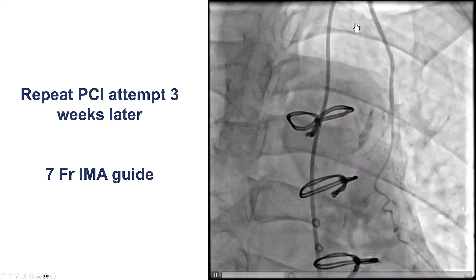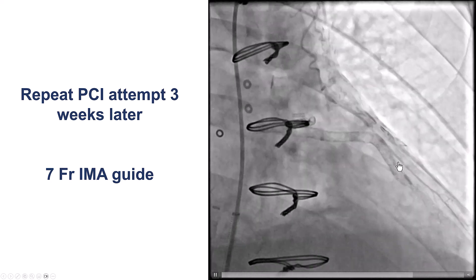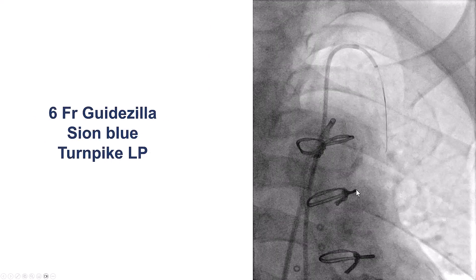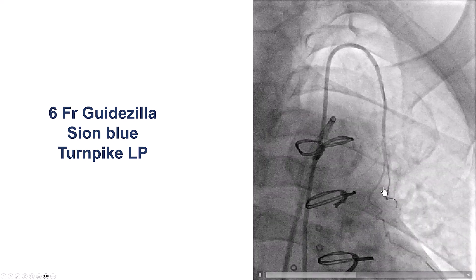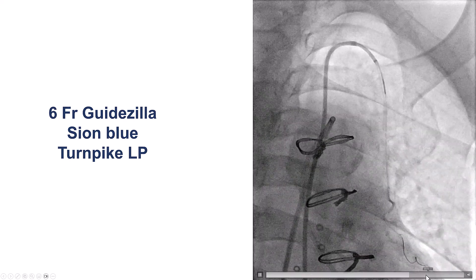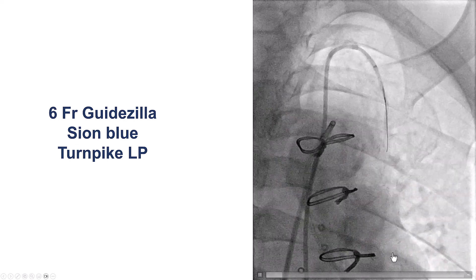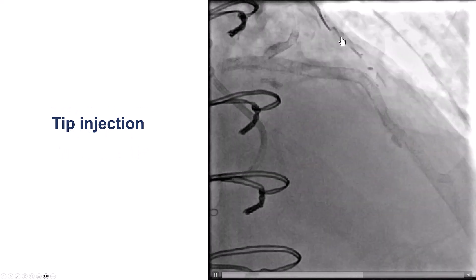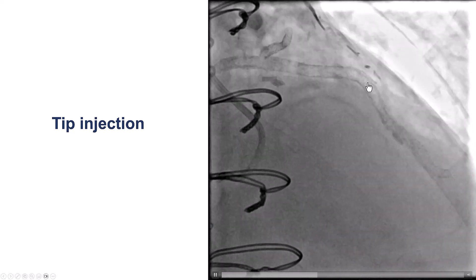The patient came back three weeks later. This is the picture of the LIMA — the vessel is visible, then becomes much smaller and tapered. This is a 7-French IM guide. We placed a guide extension and advanced a workhorse guidewire inside the LIMA. The wire moved quite a bit and is now close to the previously placed stents. A tip injection confirms we are actually very close — inside the LIMA — and the occlusion length of the LIMA is fairly short.